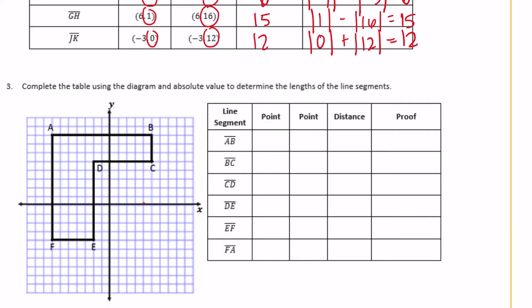On the next part, they haven't given us the coordinates, so we need to find them from the coordinate plane. Segment AB: A is at negative 7, 8 and B is at 5, 8. They are on opposite sides of 0, differing in the x-coordinate. So we add: absolute value of negative 7 plus absolute value of 5 equals 12. The distance is 12.